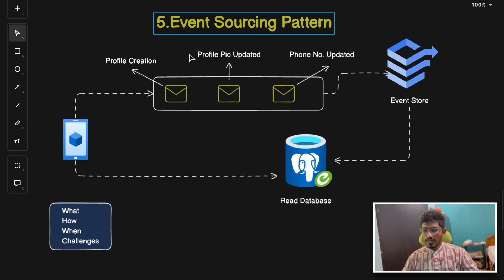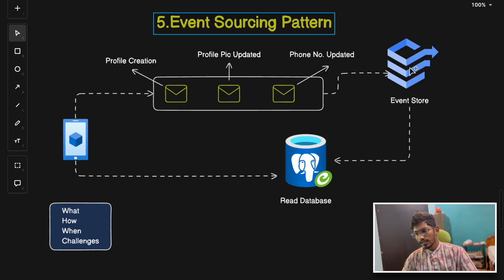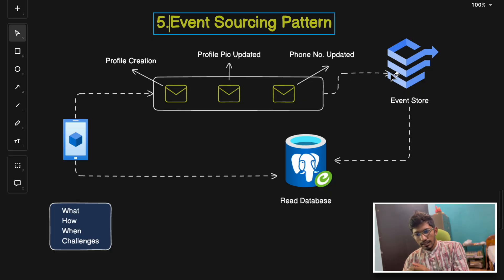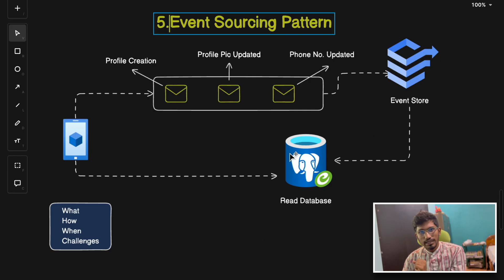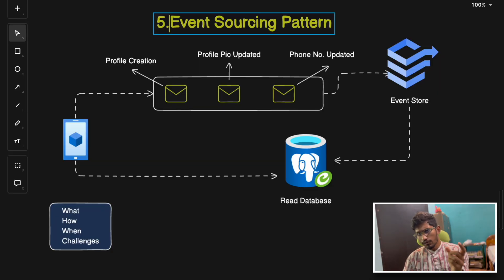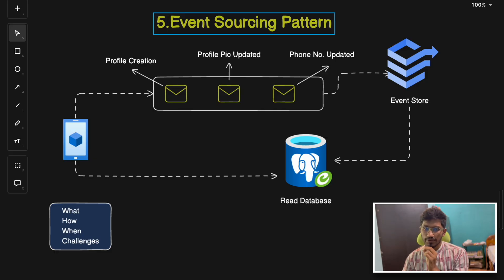The fifth pattern is Event Sourcing. It stores changes as a sequence of events rather than updating state directly. Events are stored in an event store — for example, profile creation, profile picture updated, phone number updated — instead of modifying database records directly. The application then reconstructs the current state by replaying these events and gradually updates the database state. This pattern suits systems with eventual consistency requirements.